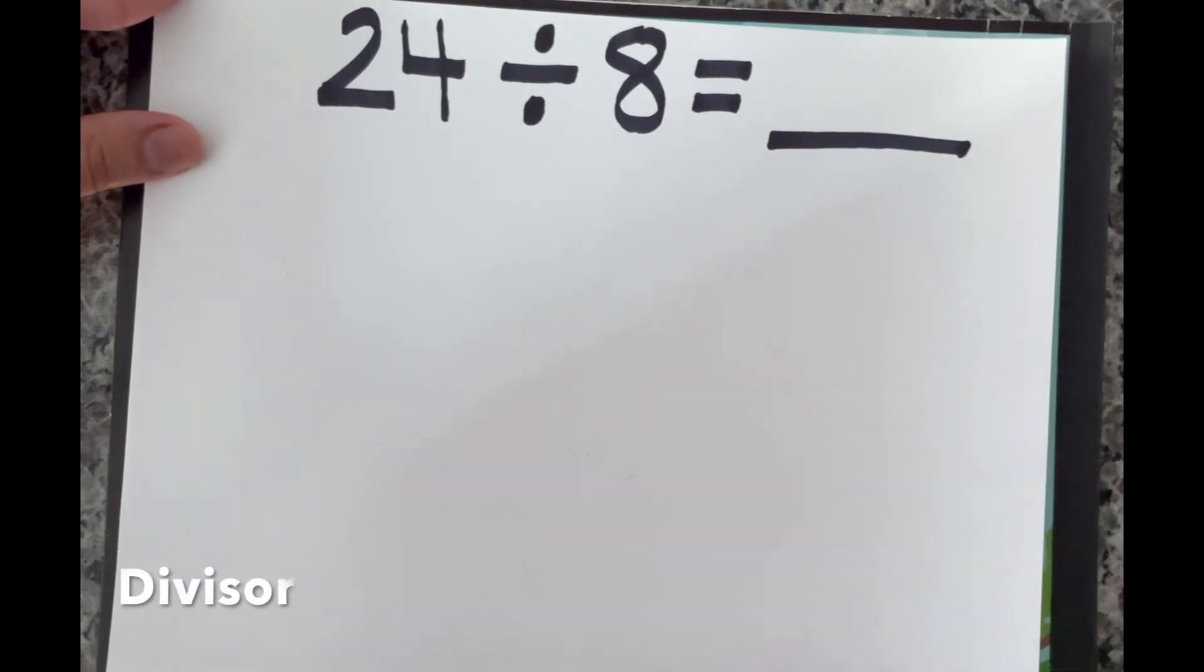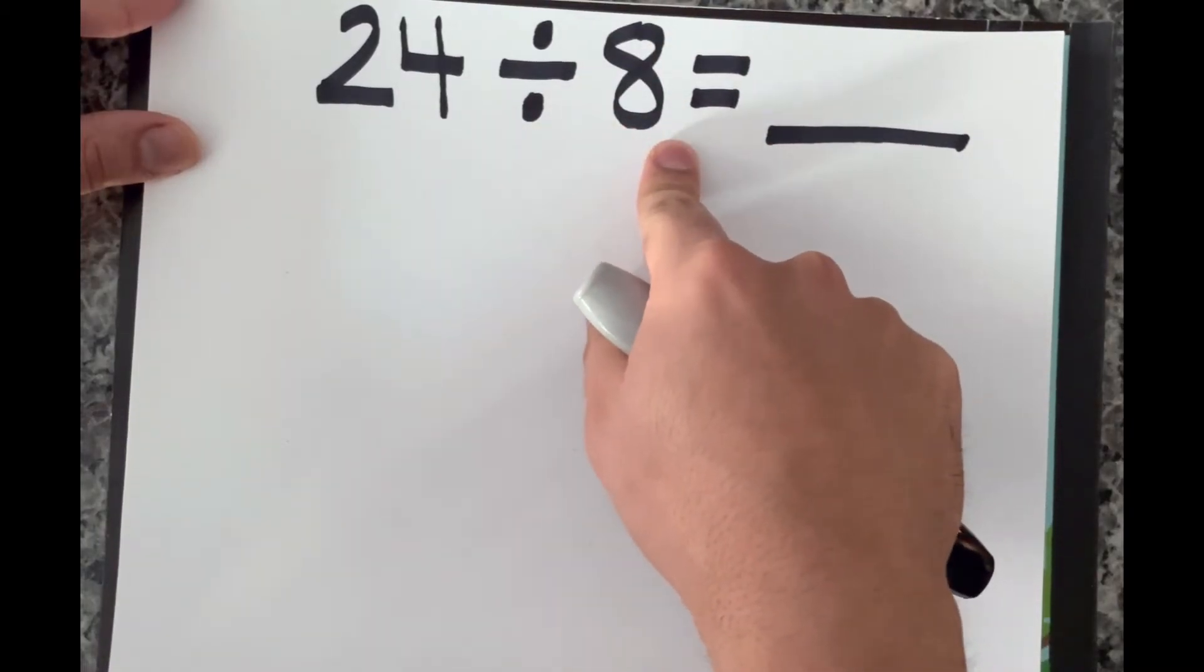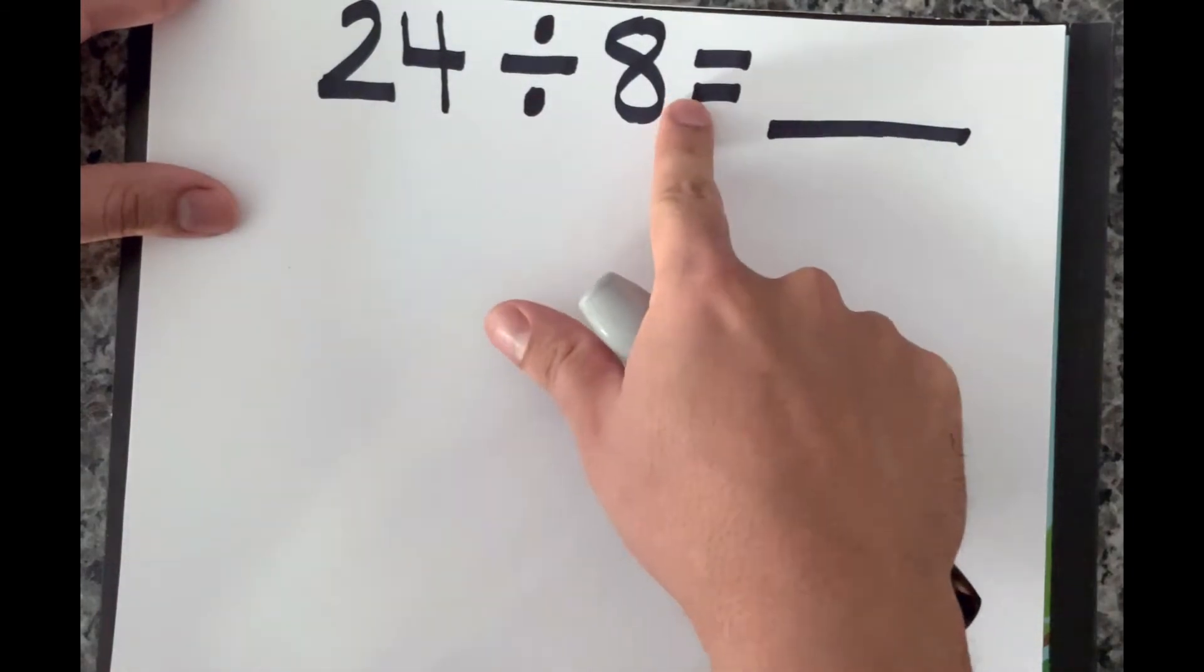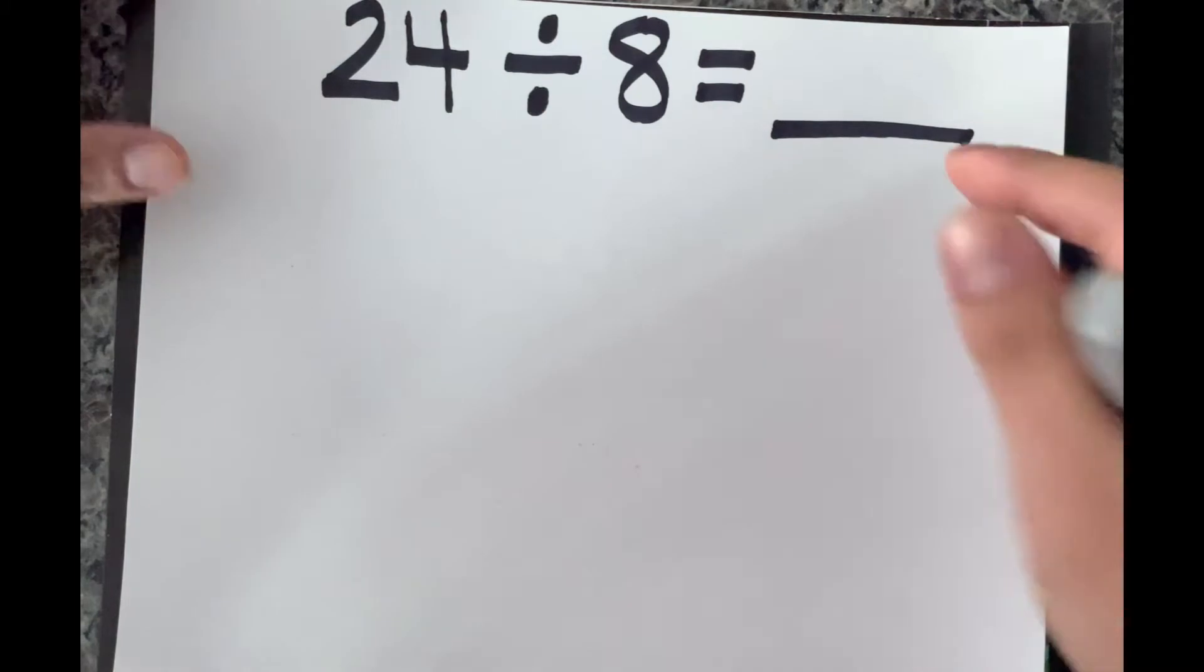Okay, the next word we have is divisor. And no, I'm not talking about the visors that you wear. I'm talking about a divisor right here, and it's usually the number that's in the middle of the equation.